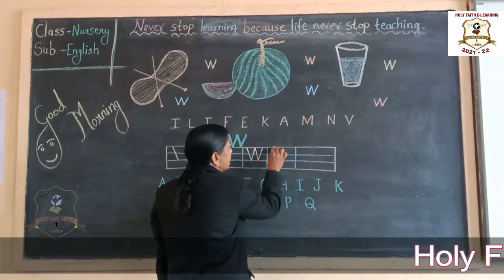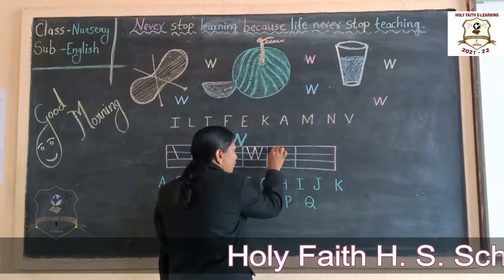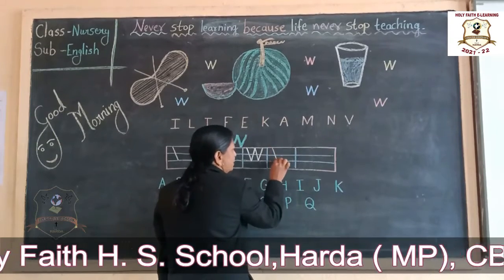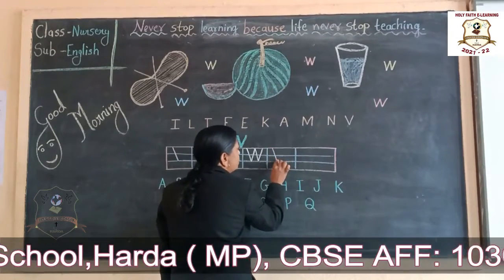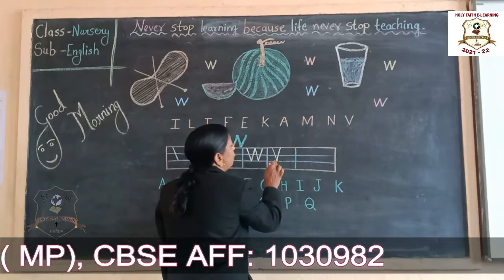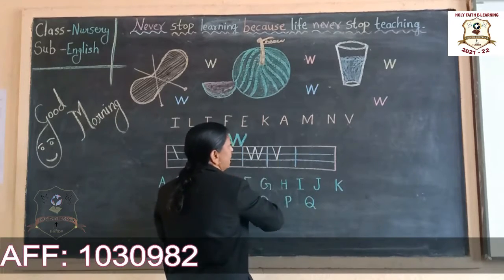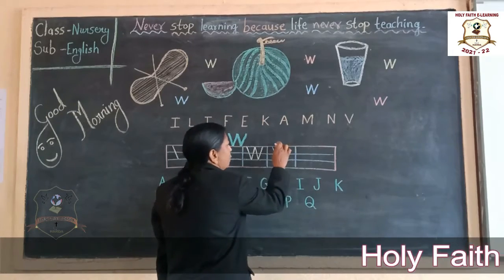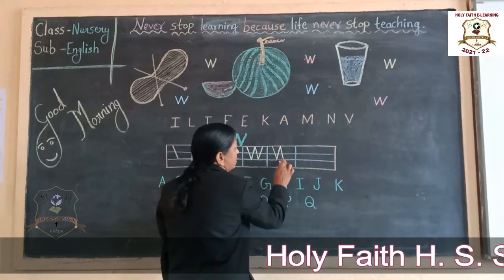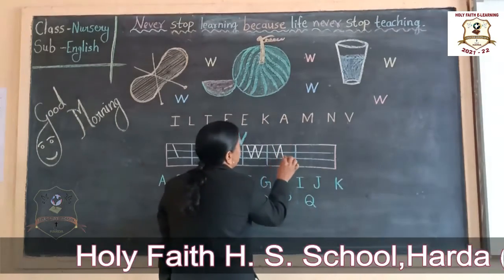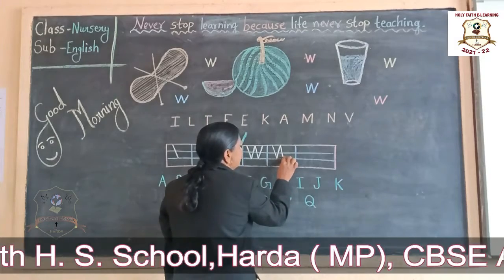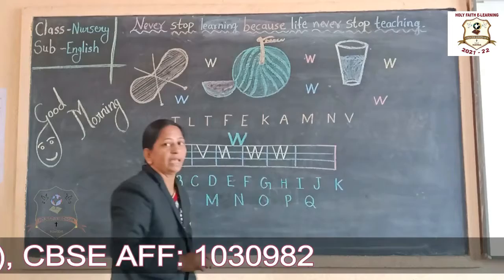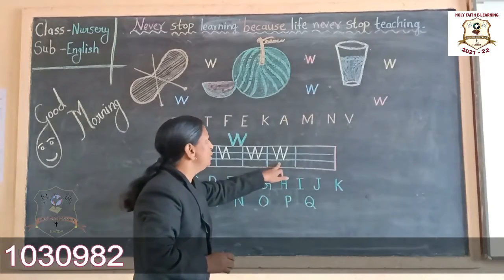Now look here. We draw a slanting line from the pink line to the second blue line, then from the second blue line back to the pink line, then again from the pink line to the second blue line, and finally from the second blue line to the pink line. This is letter W.